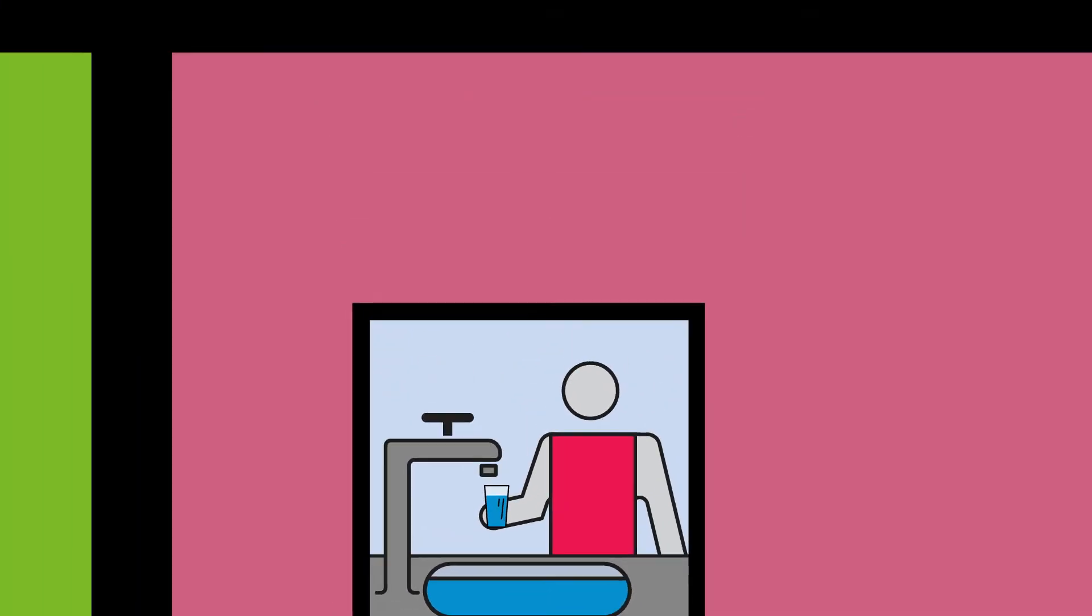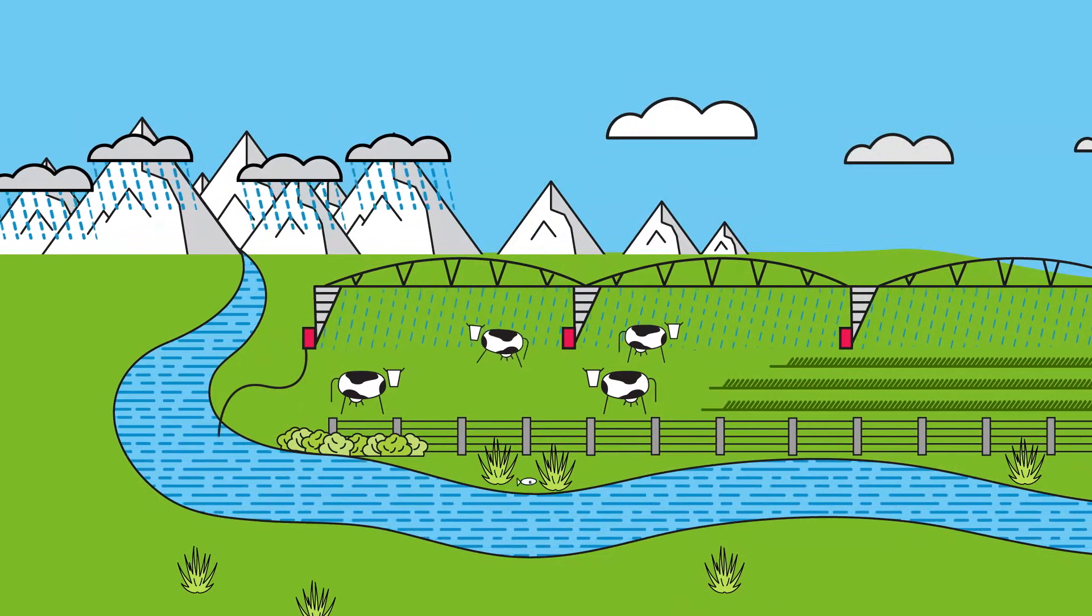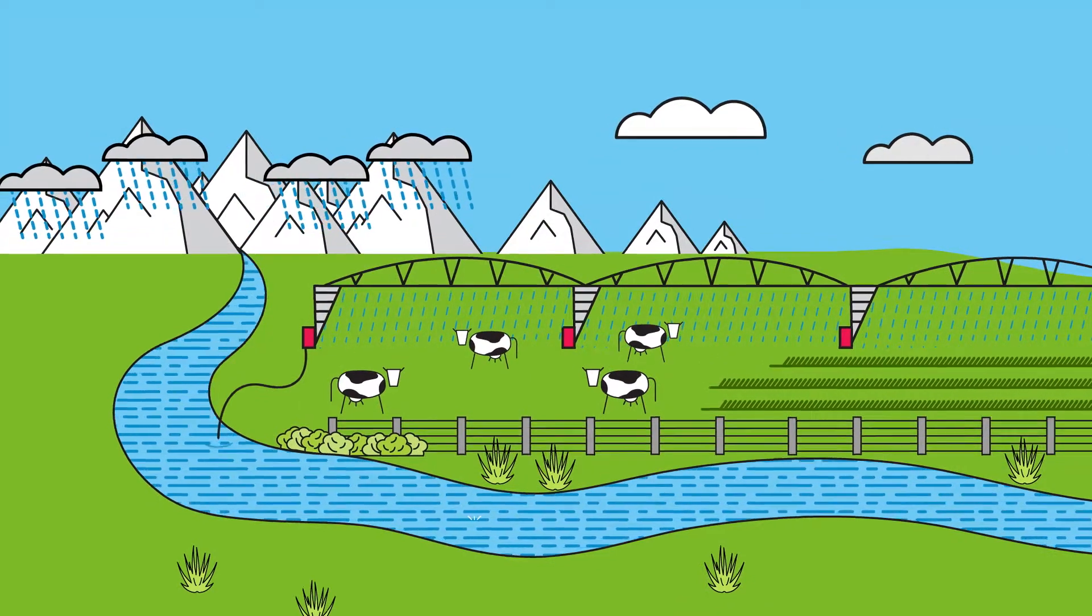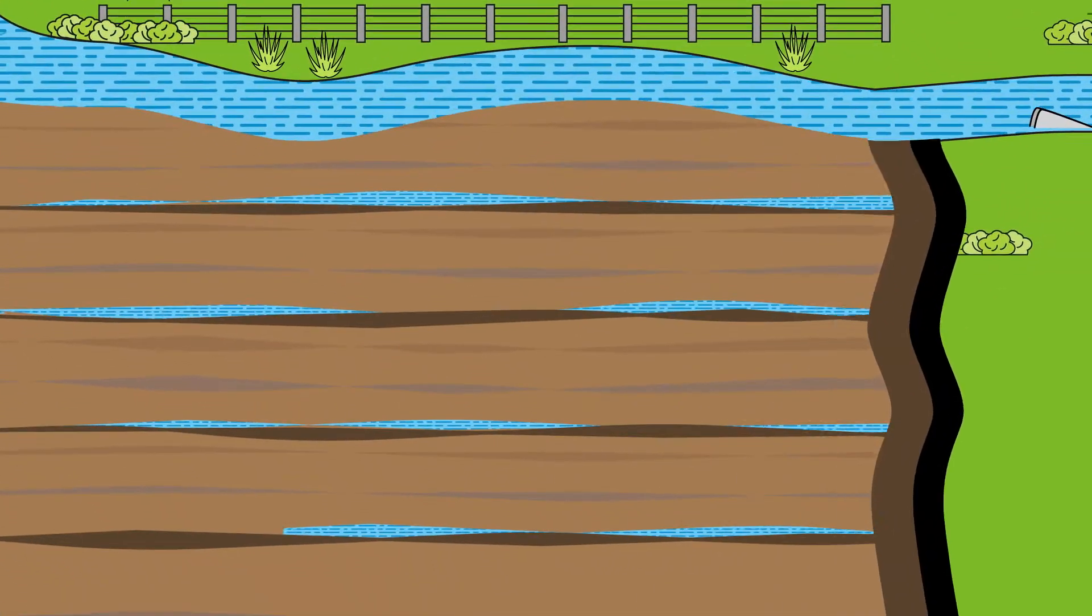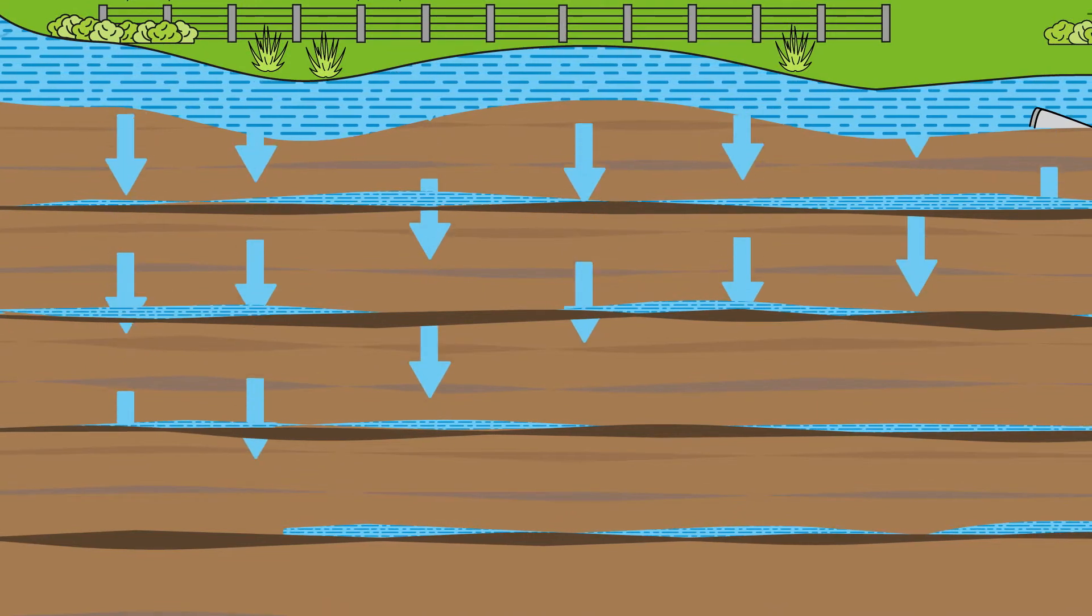It comes from the Waimakarere River to the north and from rainfall to the west and north of the city. River and rainwater seeps into the underlying gravels and flows through the aquifers towards Christchurch.